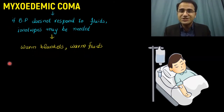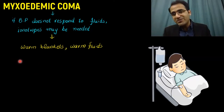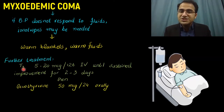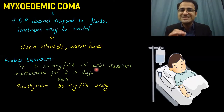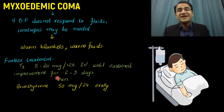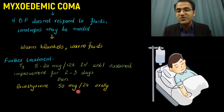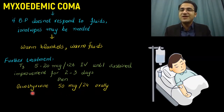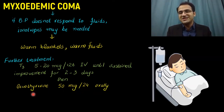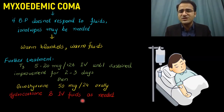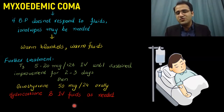After the initial treatment, continue T3 liothyronine 5 to 20 micrograms every 12 hours IV until sustained improvement is seen — usually for 2 to 3 days. Then shift the patient to levothyroxine 50 micrograms once daily orally, which serves as long-term replacement for the deficient thyroid hormones. Hydrocortisone and IV fluids can be continued as needed while the patient remains admitted.